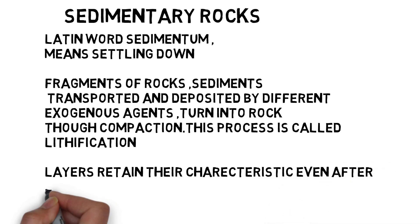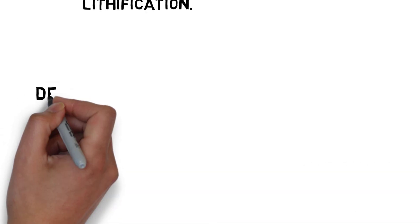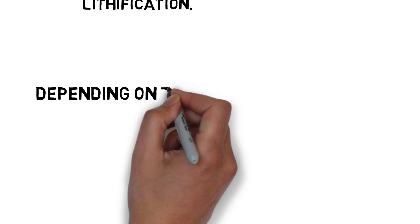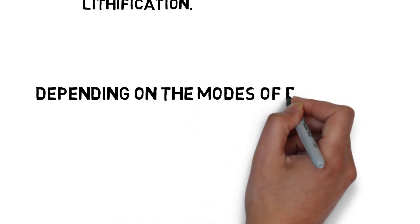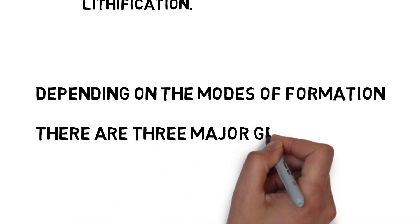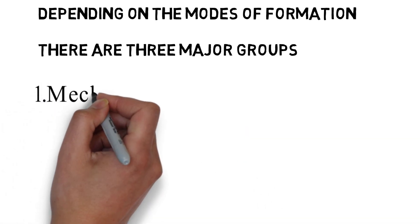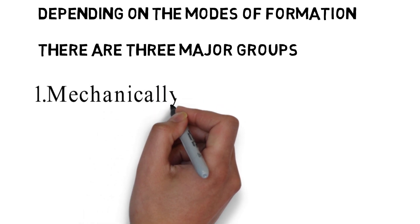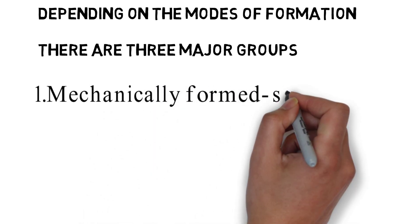However, in this process layers retain their characteristics even after lithification. Depending on the modes of formation there are three major groups. First, mechanically formed. Examples of these are sandstone, conglomerate, limestone, shale, loess, etc.